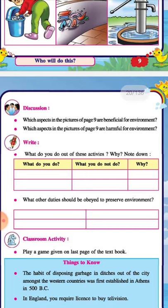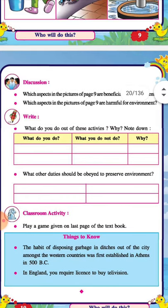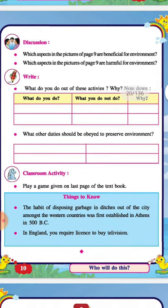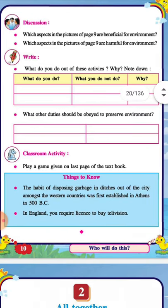So we should follow all these things. What other duties should be followed to preserve the environment? We should not cut plants or trees for our use. One more thing: if you are going a very short distance, you should walk and not use your vehicle, because if you use your vehicle you will waste the fuel. Like this, many things are there.